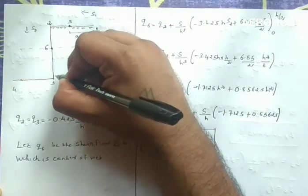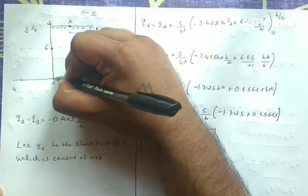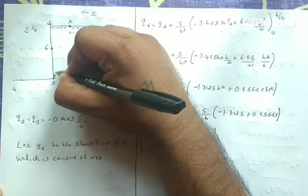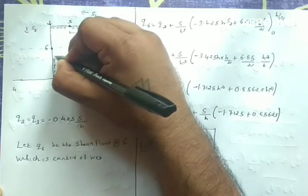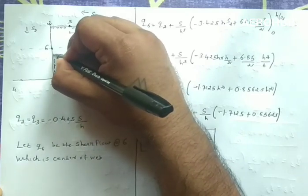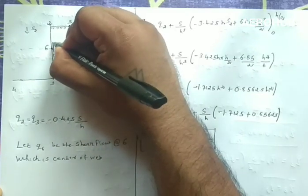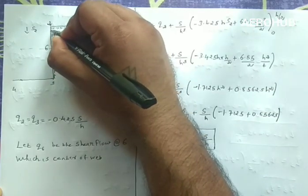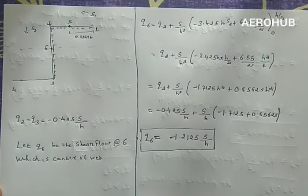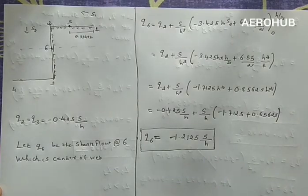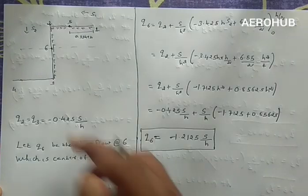We can now draw the shear flow distribution: starting from point 0.3, it increases towards point 0.6 where it is maximum, then decreases back towards point 0.2. Now we will analyze portion 3-4.